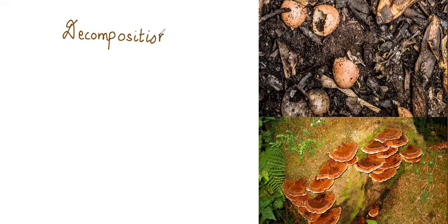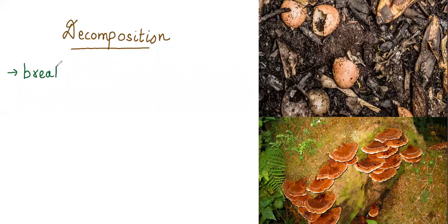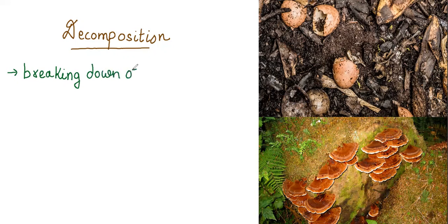Organic matter means the natural matter which we get by nature. It can be plants, animals, worms, anything which is living. So we can say that decomposition can be defined as breaking down of complex organic matter into inorganic matter.